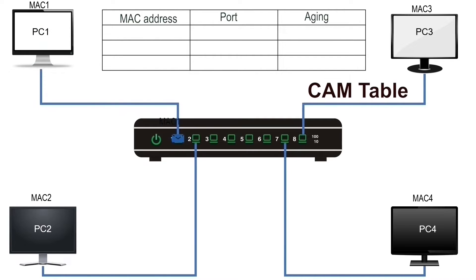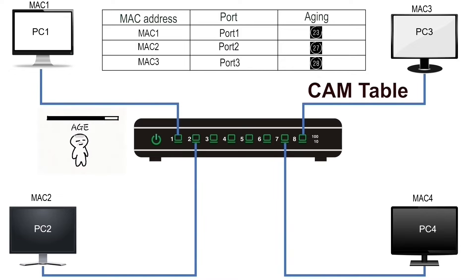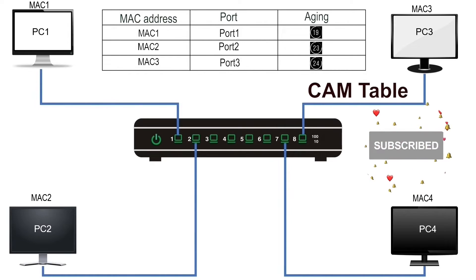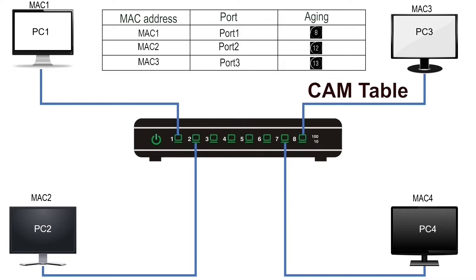In the MAC address field, it saves the MAC address the frame has in the source field. In the port field, it saves the port information on which the switch received the frame. In the aging field, it saves a timer. It assigns a separate timer to each entry of the CAM table. This timer is used to age out old entries from the CAM table, allowing room to store new entries. This feature is known as aging. Once the CAM table is full, the switch has no place to store any new addresses. Aging resolves this issue by automatically removing the old entries from the CAM table.